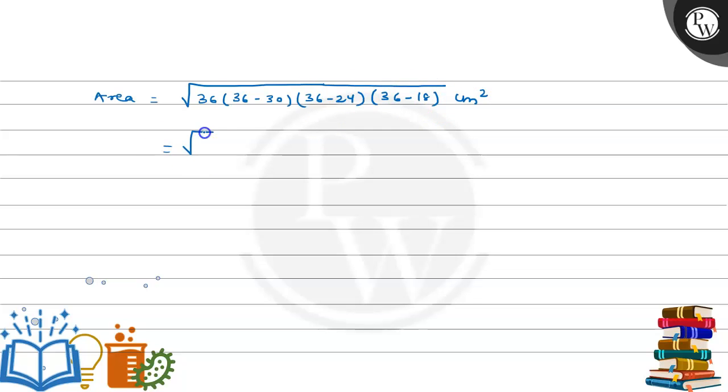Simplifying: 36-30=6, 36-24=12, 36-18=18. So Area = √(36×6×12×18) cm². We can rewrite this as √(6×6×6×6×2×9×2) cm².